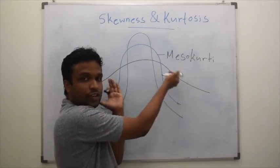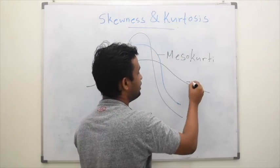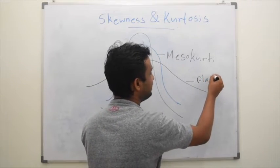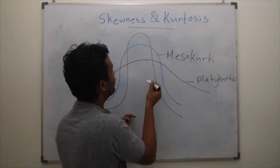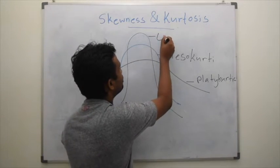If it is almost like a normal distribution, we call that mesokurtic. If the tails are heavy or flat, we call them platykurtic. If the tails are small, we call them leptokurtic.